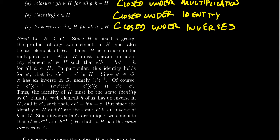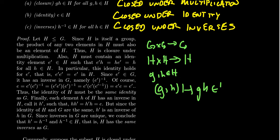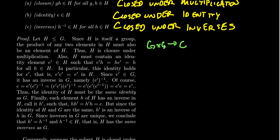If H is a subgroup, we have the operation G×G→G. The restriction of the operation will be H×H→H. Therefore, if we take elements g and h which are in H, the pair (g, h) maps to an element gh which belongs to H. So you get the closure principle pretty quickly from the definition of a subgroup.